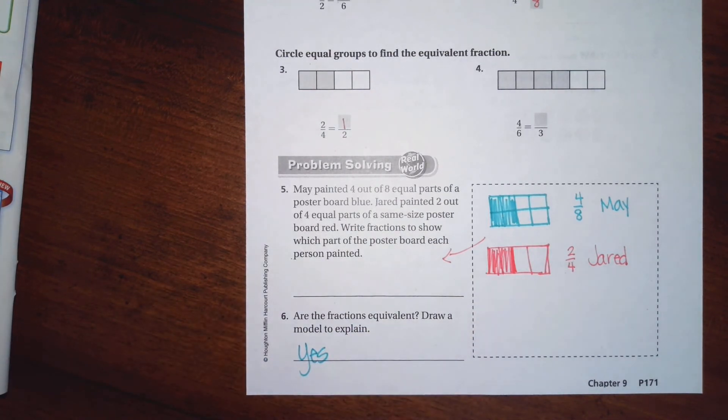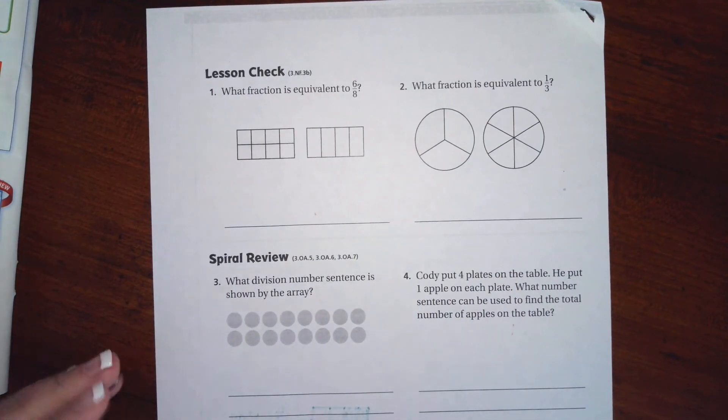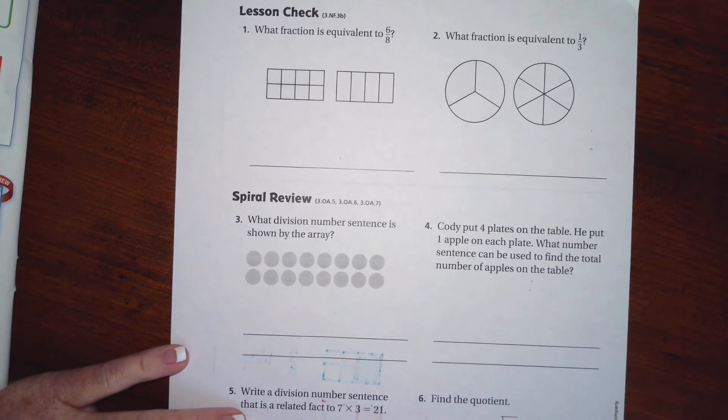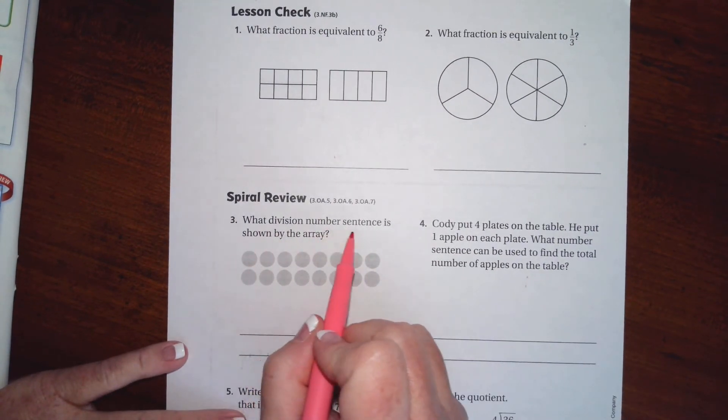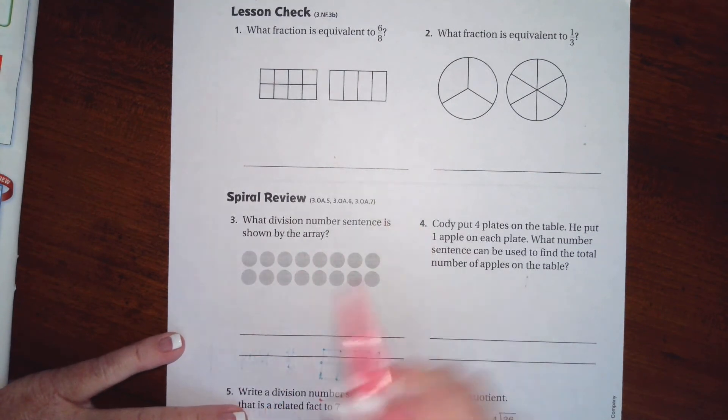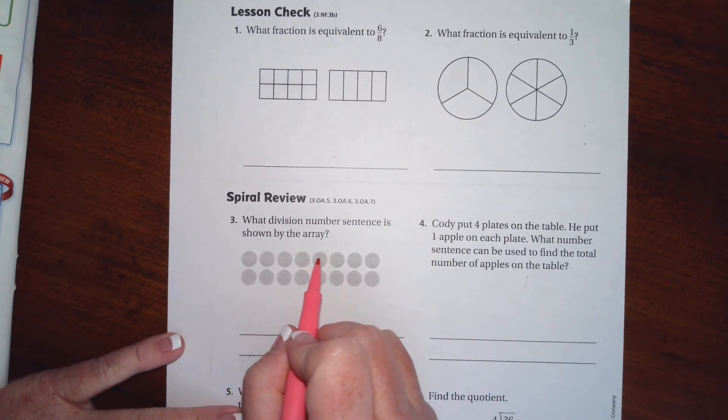We're going to go on to the back where you guys are going to do the final lesson check of the chapter. We're going to go down and do the spiral review. What division number sentence is shown by the array? We have one, two, three, four, five, six, seven, eight plus another eight is sixteen.